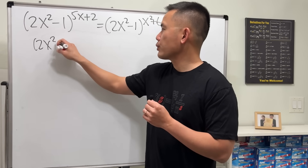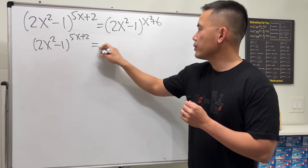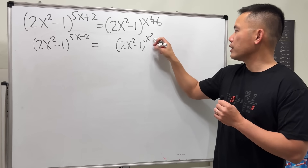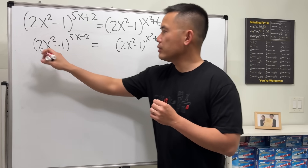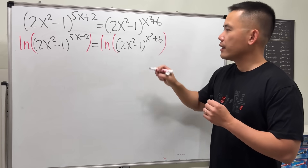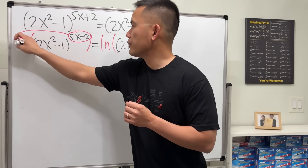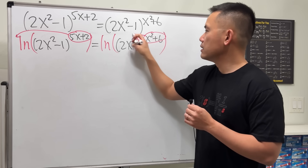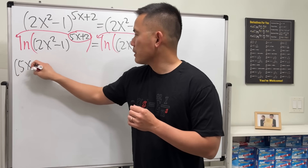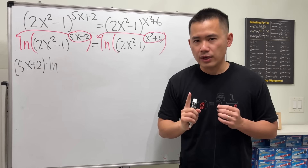So I'm going to write this down again: (2x² - 1) raised to the power of (5x + 2) equals (2x² - 1) raised to the power of (x² + 6). I'm going to take the natural log on both sides, because this will allow us to bring the exponents to the front.